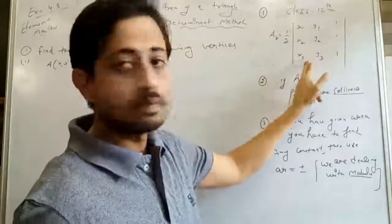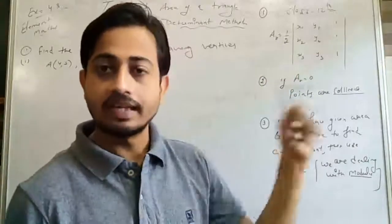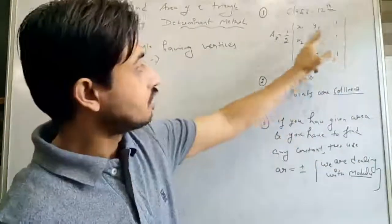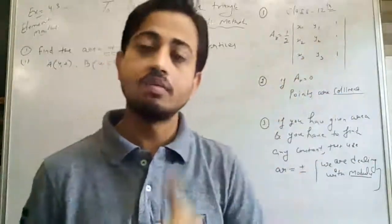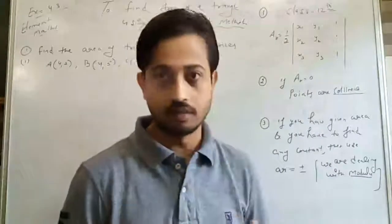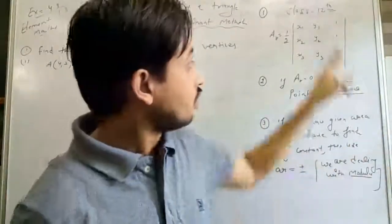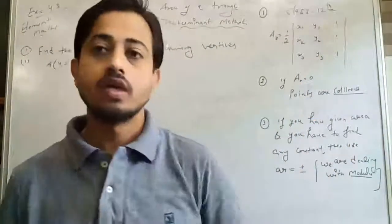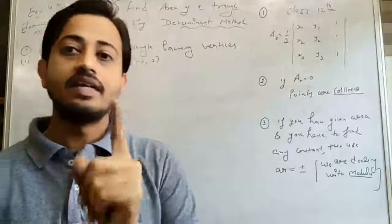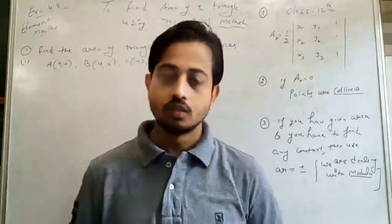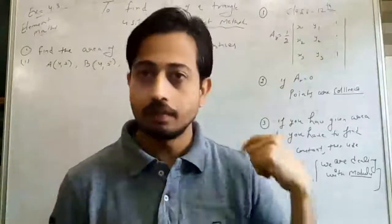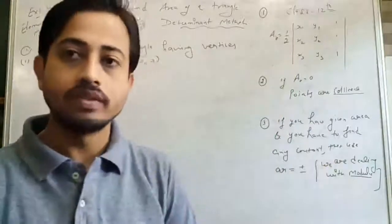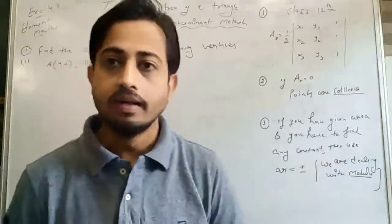The first column represents your X coordinates (X1, X2, X3). The second column represents your Y coordinates (Y1, Y2, Y3). And the third column remains 1, 1, 1. The whole Determinant is then divided by 2, which gives your desired area of the triangle. Keep this formula in mind — you basically use it to calculate the area of the triangle.